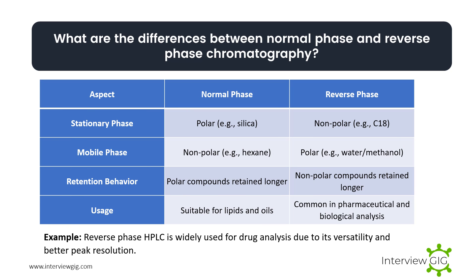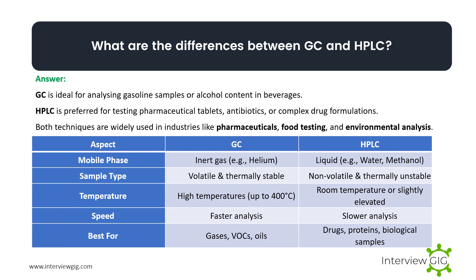What are the differences between normal phase and reverse phase chromatography? In normal phase, the stationary phase is polar and the mobile phase is nonpolar — polar compounds are retained longer, suitable for lipids and oils. In reverse phase, the stationary phase is nonpolar and the mobile phase is polar — nonpolar compounds are retained longer, commonly used in pharmaceutical and biological analysis. Example: reverse phase HPLC is widely used for drug analysis due to its versatility and better peak resolution.